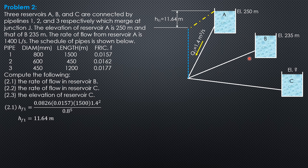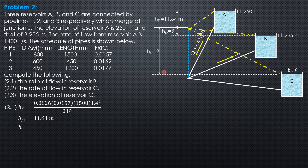The flow direction is towards B — inflow. HF2 can now be computed. The direction is towards B and towards C. HF2 is 250 minus 235, that is 15 minus 11.64, giving HF2 equal to 3.36 meters.